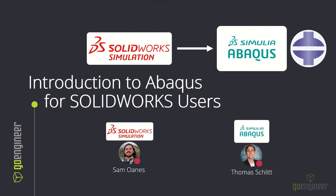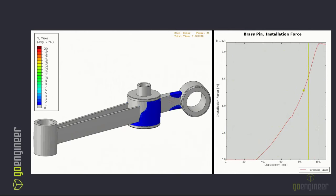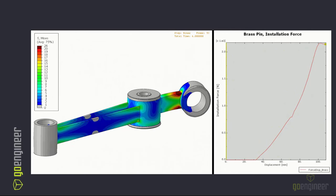Hello everybody, thank you for stopping in for this video. Today we're going to be talking about finite element analysis, more specifically SolidWorks simulation and its big brother Abaqus. We're going to be presenting a demonstration of SolidWorks simulation and Abaqus as they approach a multi-step problem — in particular, the installation of two rubber bushings into a steel control arm, followed by the installation of a brass fitting into the bushings themselves.